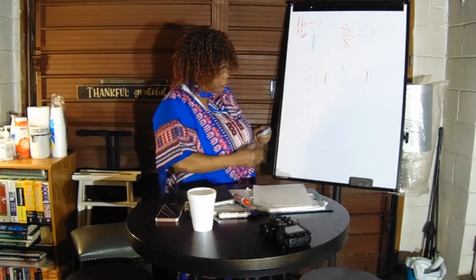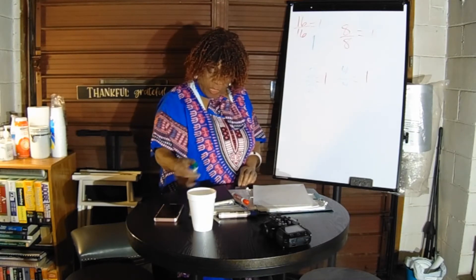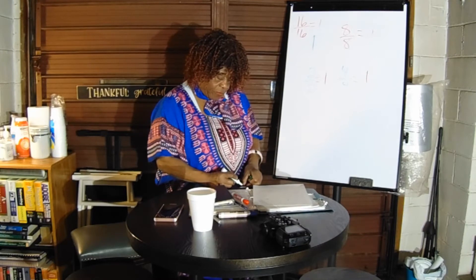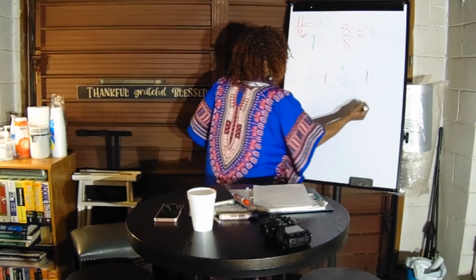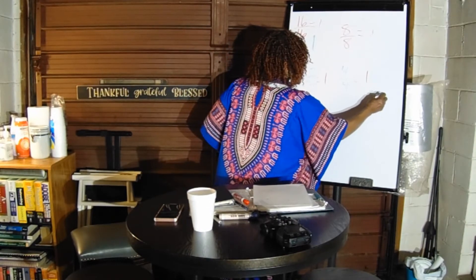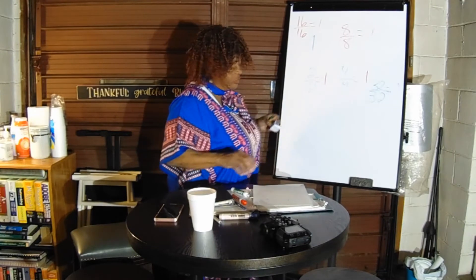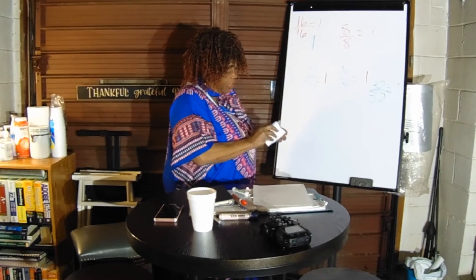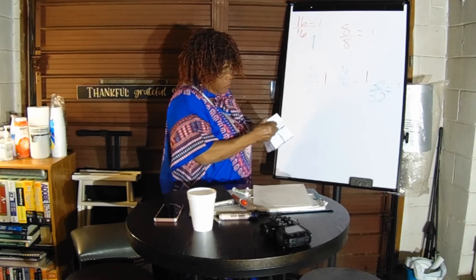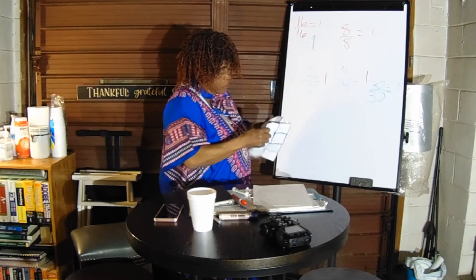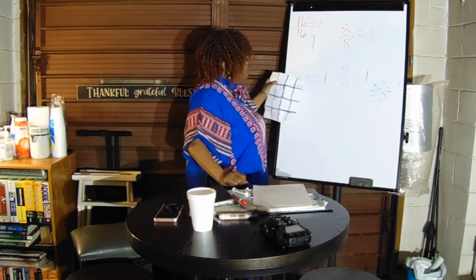So we have sixteen parts now. What if I fold that paper one more time? I'll have thirty-two pieces. Now we have thirty-two pieces, but we still have just one sheet of paper. Remember, one sixteenth equals two over thirty-two.